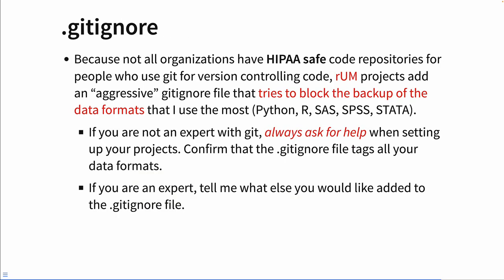Because I work with Protected Health Information, I worry a lot about data leakage. RUM adds a very aggressive gitignore file, which attempts to block common data formats. If you're not using git, don't worry about this. If you're a novice, always ask for help and get an expert to make sure that you're not accidentally backing up copies of your sensitive data. If you're an expert, please tell me what else you'd like to see added to the gitignore file.